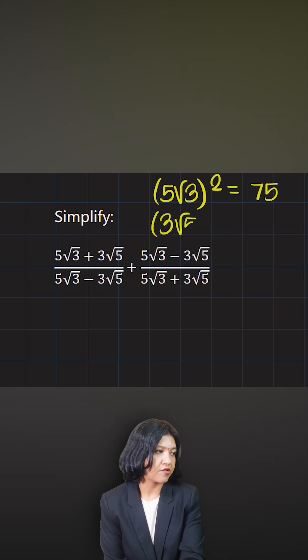Similarly, 3√5 is the next number. So square it. 3 squared is 9 times 5 is 45.